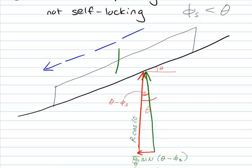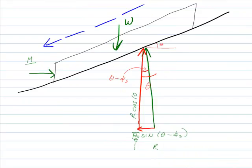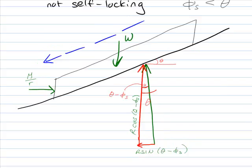As with the other examples, I'm going to have some weight or force pushing down here. Since it's not self-locking, I'm going to have to apply a force over here. M over R. So now if we sum in the x direction, we get that M over R.